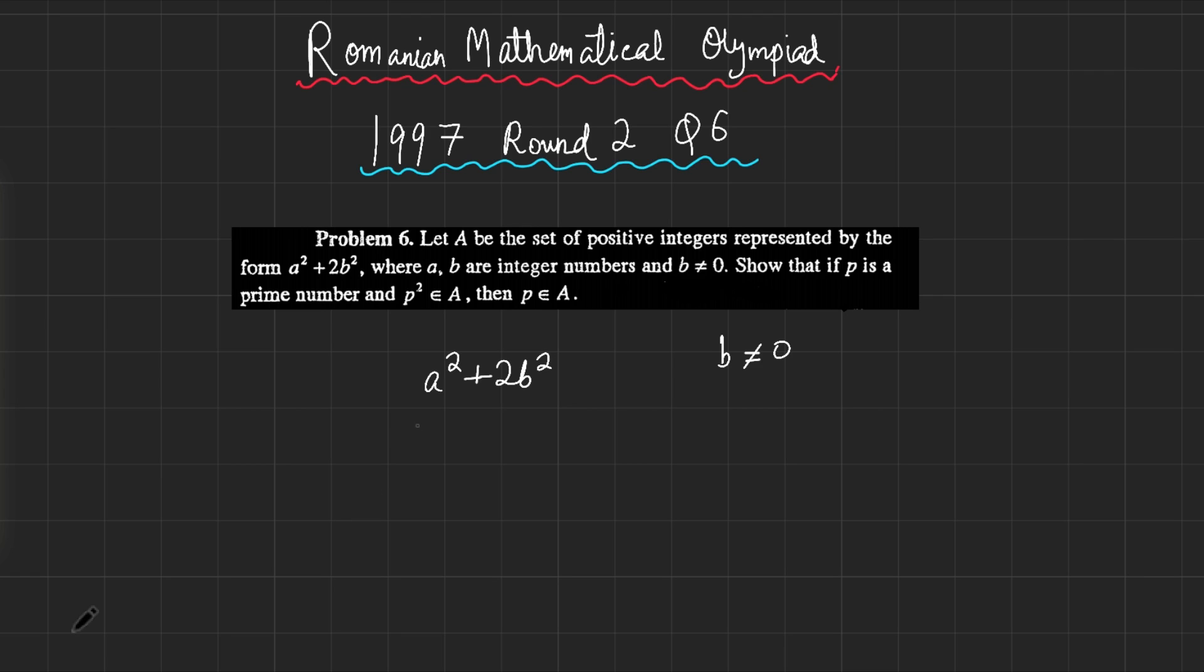If you want to give the problem a try, you can pause the video and do so now. But the problem essentially states, in a less notation-heavy way, if you have integers such that p squared equals, let's call the integers a1 squared plus 2b1 squared, then prove that there must exist two integers such that p equals a2 squared plus 2b2 squared. Obviously here, b1 and b2 can't be 0 by the condition.